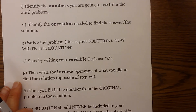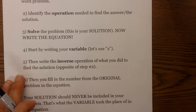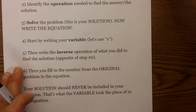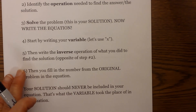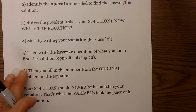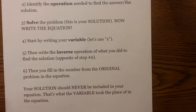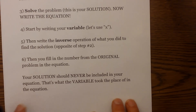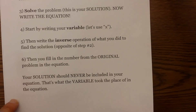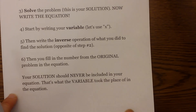Now we are going to write the equation — again, we are kind of working backwards. We will start by writing your variable, and let us use x, and then write the inverse operation of what you did to find the solution. Then you fill in the number from the original problem in the equation. This is very important: your solution should never be included in your equation, because that is the variable you are looking for.